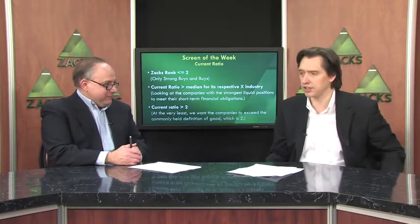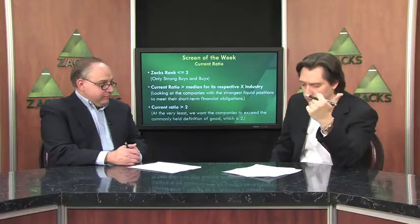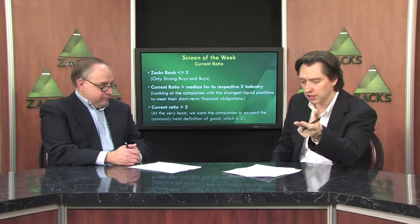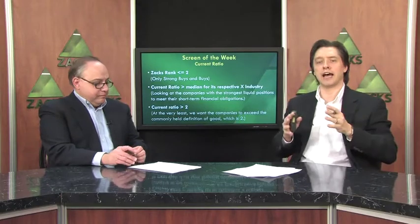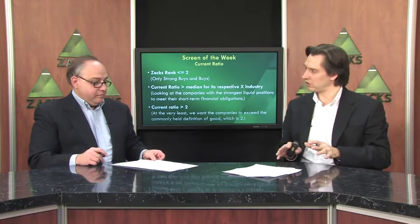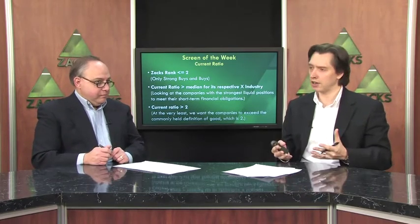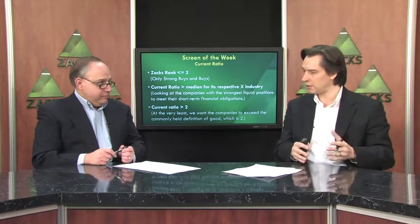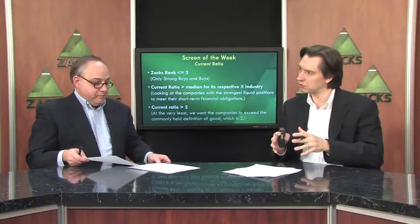So now that we know what it is, how do we use it? Screening for it is actually quite easy. It is a ratio, so if you look at any of our screeners like the ones on Zachs.com or even the Research Wizard, you're going to first find the ratios category and then go to the liquidity and coverage section. Once you're there, you'll find an item called current ratio. Looking at a current ratio above 2 is good, but one of the best ways to use it is to compare the company's current ratio to the median for its industry, because each industry has something considered average for them.